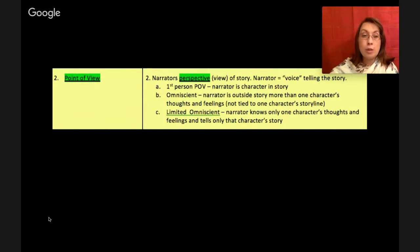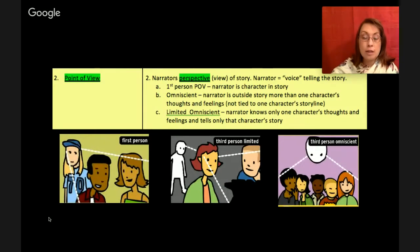Next item two is point of view otherwise known as POV. Go ahead and write underneath where it says point of view, write POV so you know what I mean when I talk about point of view. Looking at the right side of your notes there it says the narrator's perspective or view of the story. The narrator is the voice telling the story. There are three types that I want to focus in on. First person POV is the narrator is a character in the story. The next is omniscient. This is the narrator is outside the story and the narrator knows more than one character's thoughts and feelings. They're not tied to one character's storyline. And the last one is what's called limited omniscient. This is the narrator knows only one character's thoughts and feelings and tells only that character's story.